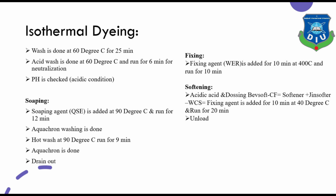Then proceed to soaping: add soaping agent at 90 degrees centigrade and run for 12 minutes. Then washing is done, followed by hot wash at 90 degrees centigrade for 9 minutes. Drain the water. Then add the fixing agent at 40 degrees centigrade for 10 minutes and run for 10 minutes. Then add the softening agent for 10 minutes at 40 degrees centigrade and run for 20 minutes. Then unload the fabric.